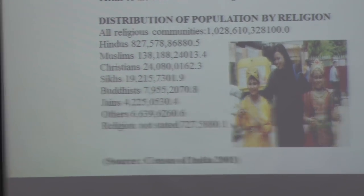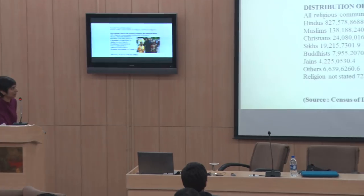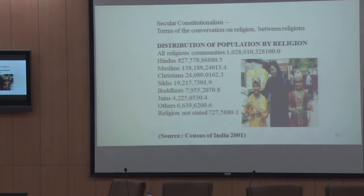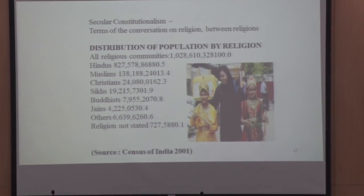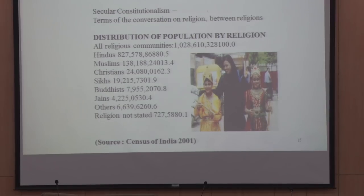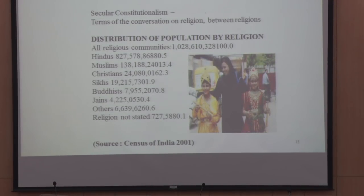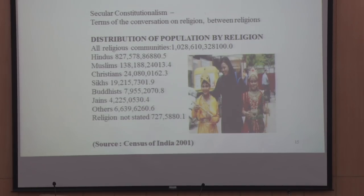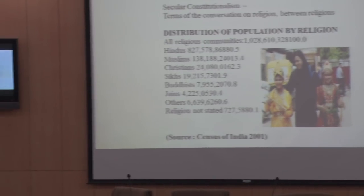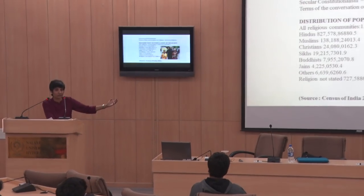Now, the laboratory for Indian constitutionalism — this is the contemporary laboratory of Indian constitutionalism. You had partition then; you have our country today. This is the census of 2001: 1.2 billion people, 800 million Hindus, Muslims, Christians, Sikhs, Buddhists, Jains, others, and religion not stated — a large, multi-ethnic, multi-religious, diverse society. This is the stake. This is the context in which the Supreme Court functions — the demographic reality of India.